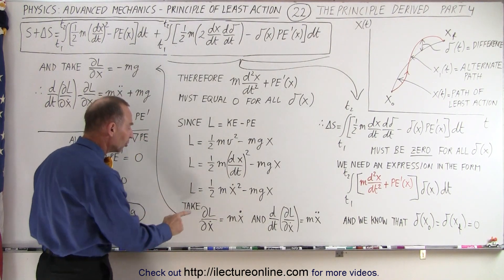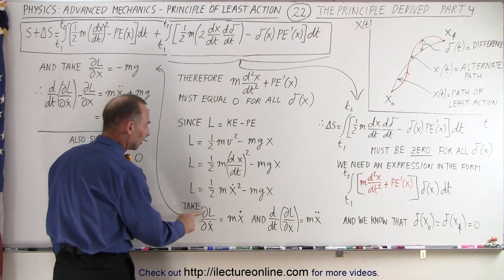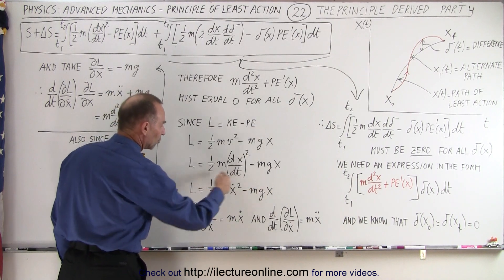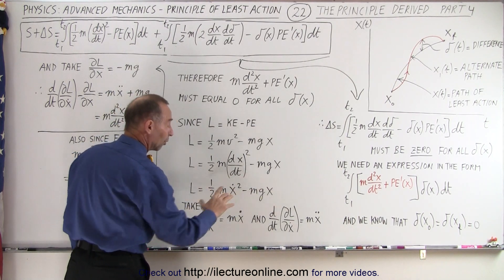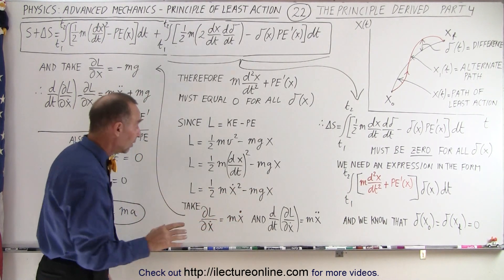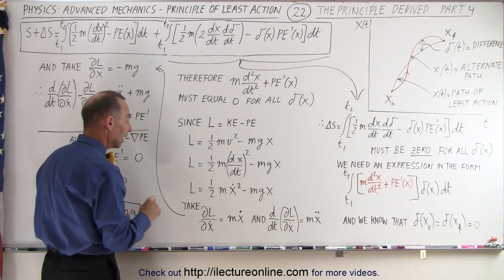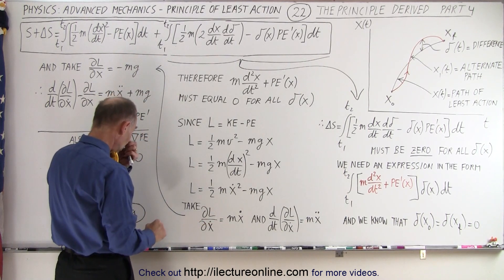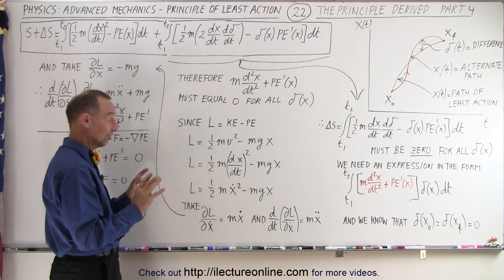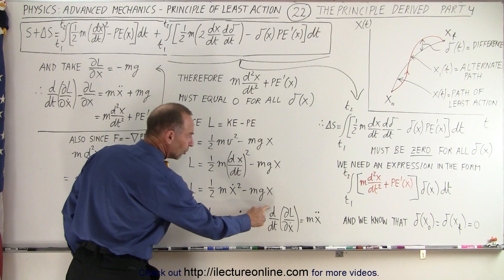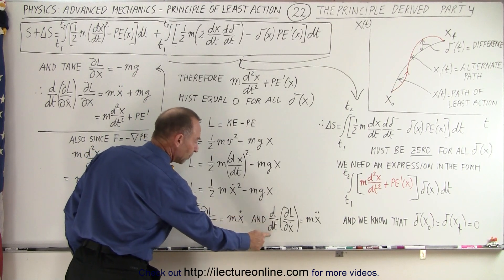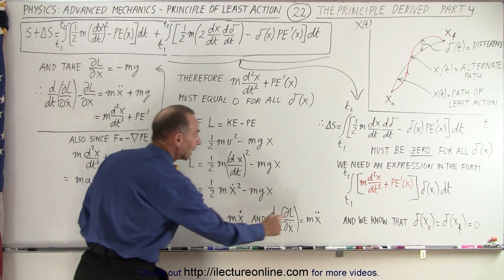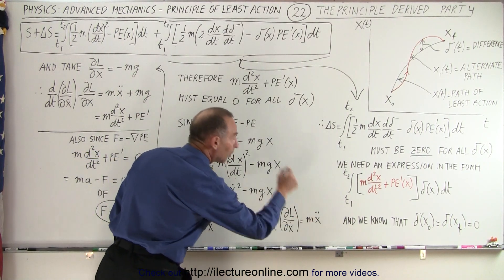What if we take the partial derivative of that Lagrangian with respect to x-dot? Taking the partial derivative of one-half m(x-dot)² with respect to x-dot, we get m·x-dot. Then, taking the derivative with respect to time of that quantity, we get m·x-double-dot.